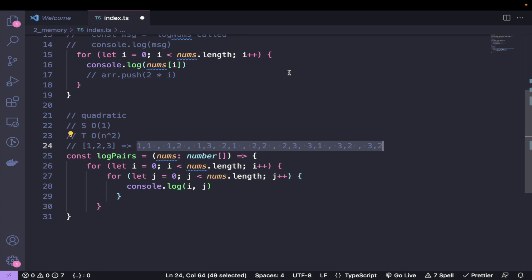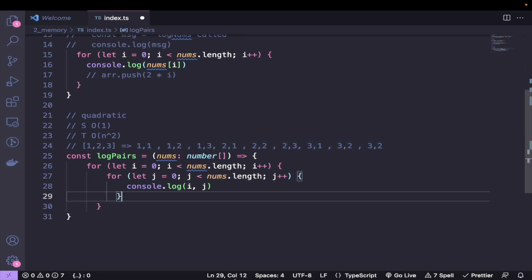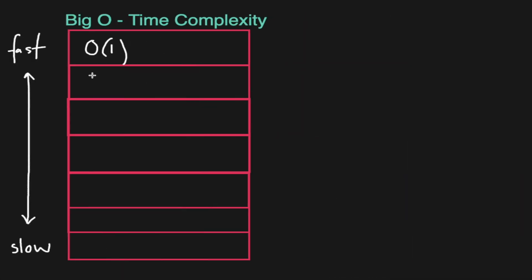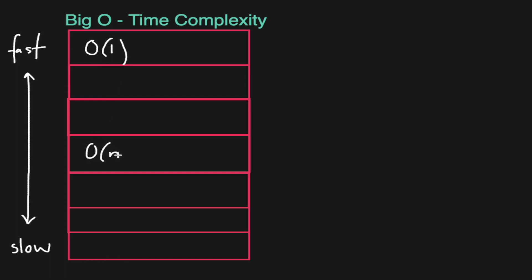Quadratic time is slower than linear time. Looking at the chart: we've got constant time, then O(n) for linear, then O(n²) here. We can also have O(n^x) where x could be n³, n⁴, n⁵ — each power getting worse and worse.